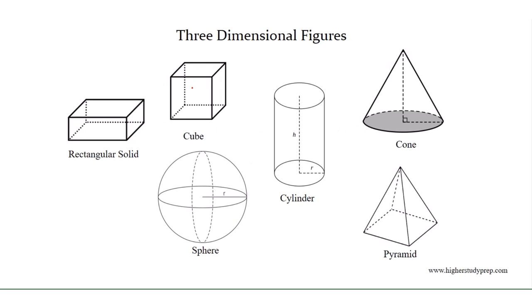There are many types of three-dimensional figures. For example: rectangular solid, cube, sphere, cylinder, pyramid, and cone.